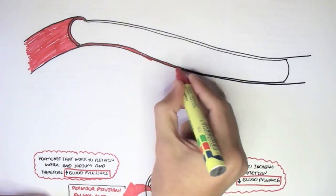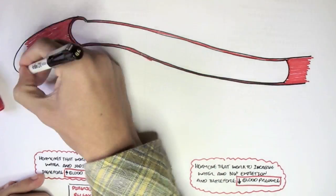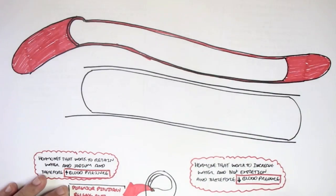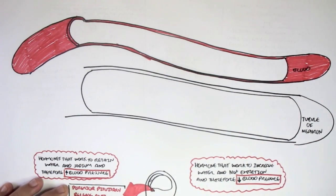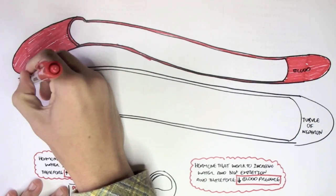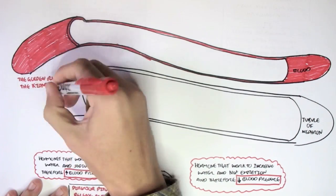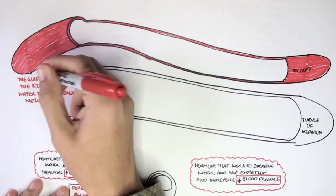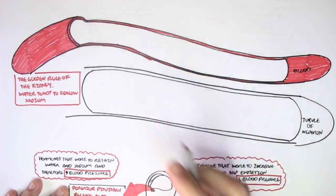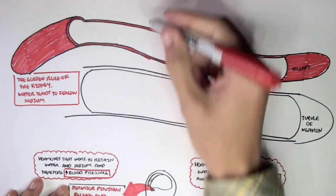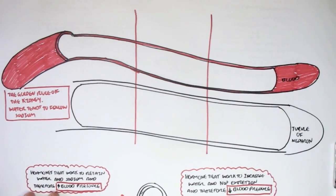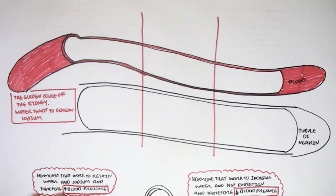To understand this, let's draw a bloodstream, the plasma, as well as the tubule of the nephron—the functional unit of the kidneys. The golden rule of the kidney that we have to remember is that water tends to follow sodium. It's the same thing as when we eat a lot of salty food, we tend to be thirsty. This is exactly the golden rule of the kidneys: water tends to follow sodium.